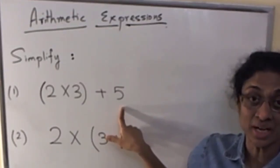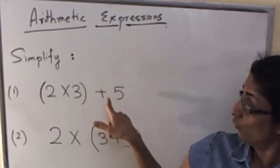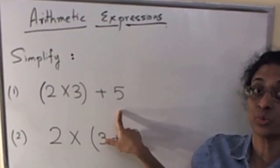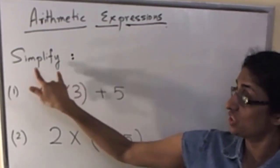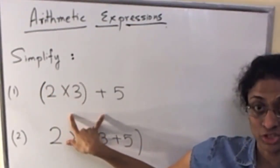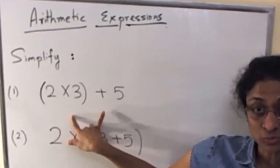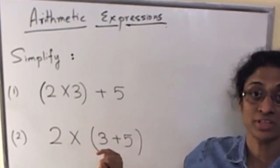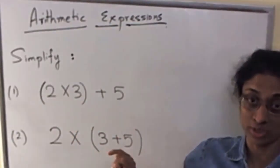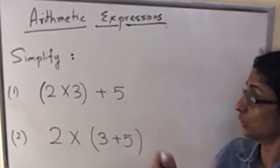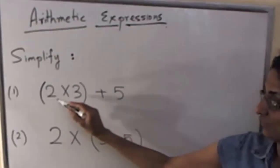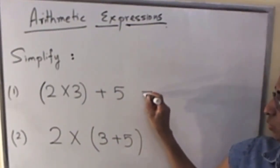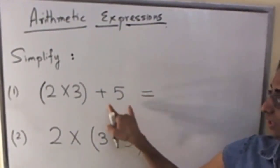Right now I'm going to show you what number it is — that is what it means to simplify an arithmetic expression. This arithmetic expression is a number, and we're going to find out what it is. The way we go about it is we put an equality sign and look at the expression.